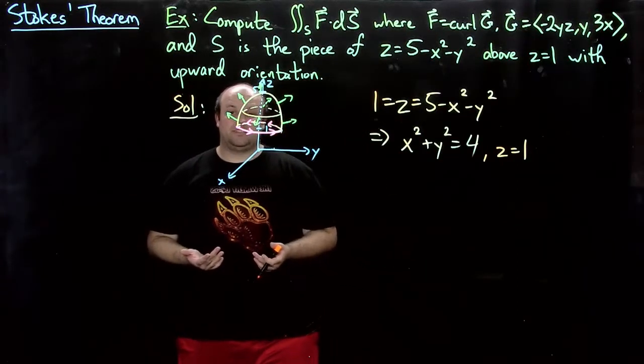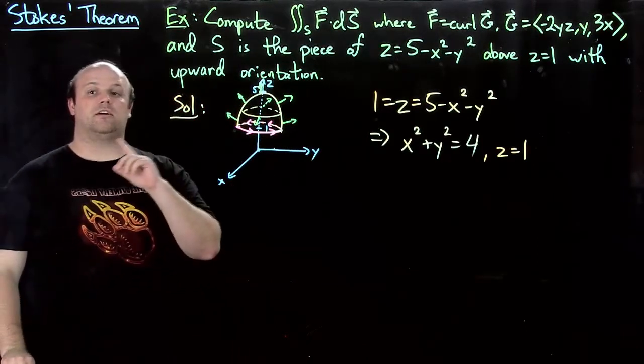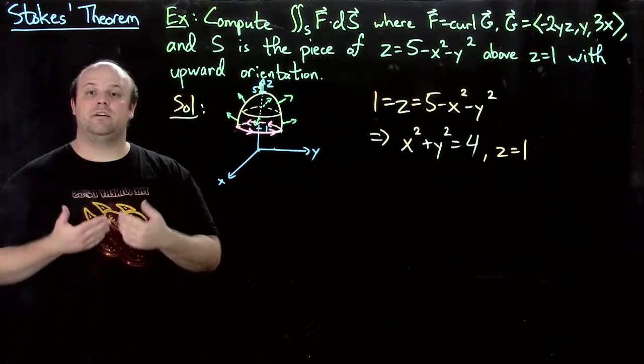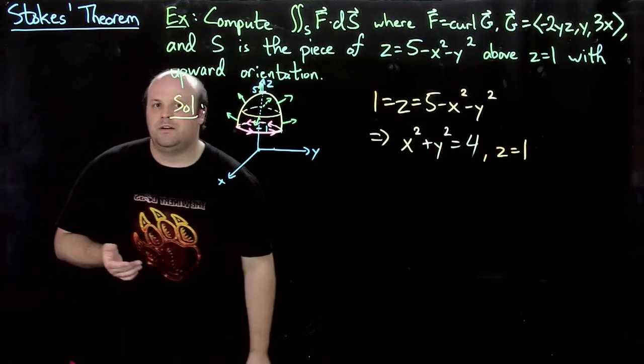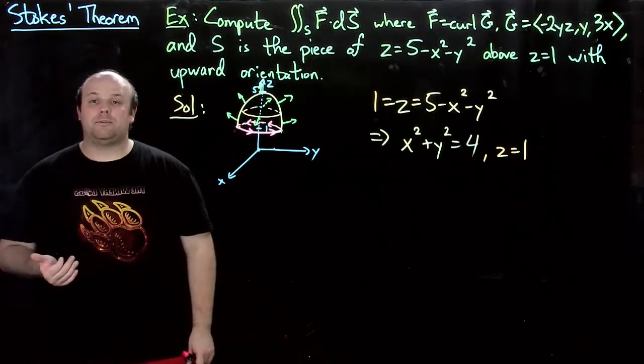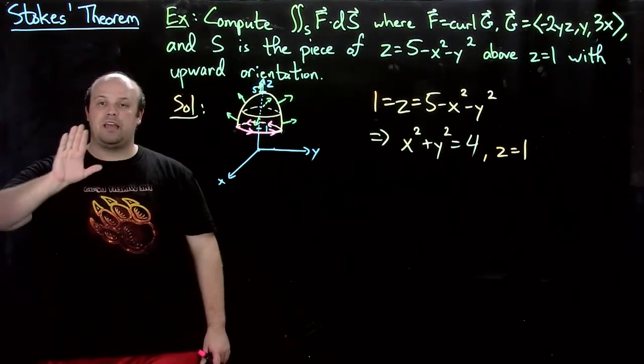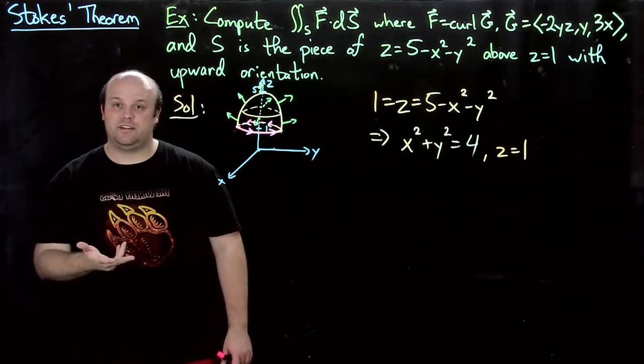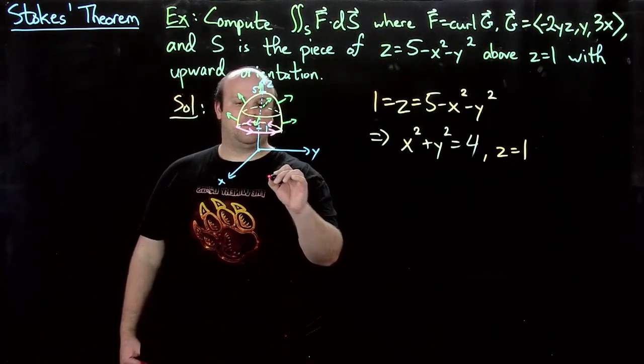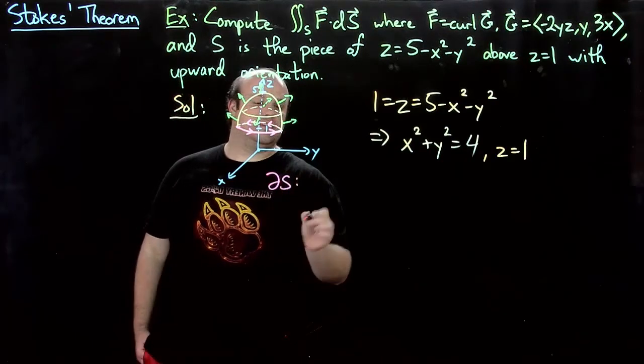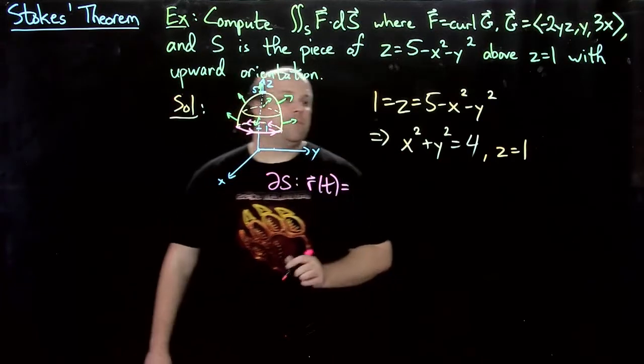So now we need to parameterize the boundary. And we need to parameterize it so that it goes in a counterclockwise way when viewed from above. Well, we know how to parameterize a circle in a counterclockwise way. That just uses x equals r cosine theta, y equals r sine theta.